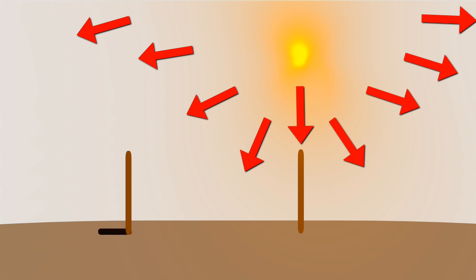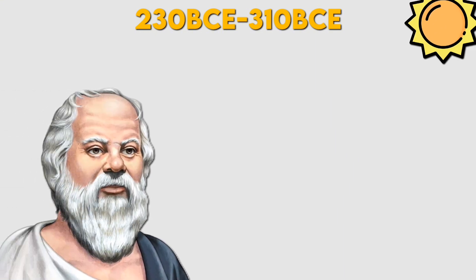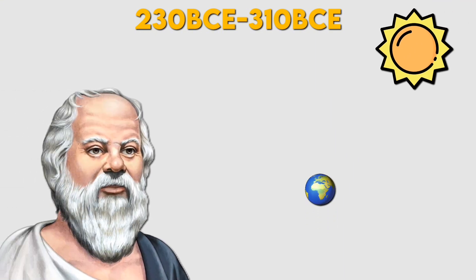This counter-argument was logically sound, as Eratosthenes had merely assumed that the sun was far away without proving it. Between 230 and 310 BCE, the astronomer and mathematician Aristarchus set out to prove that the sun was far from the Earth, thereby confirming Eratosthenes' theory that the Earth was spherical.